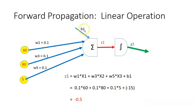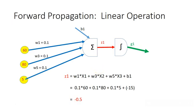Adding bias b1 = -15, we carry out the calculation and get z1 = -0.5. We have now accomplished the linear part of the first node's computation.